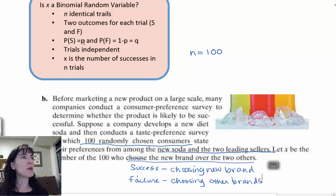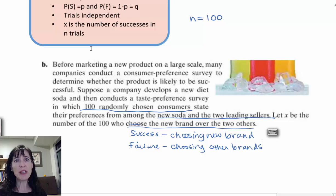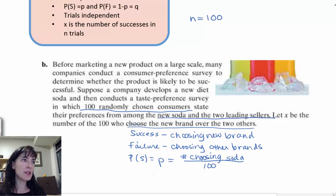And then we need to know, is there a probability of success and a probability of failure? It doesn't say what the probability of success and failure are, but we can see that it could be calculated. The probability of success, or the little p, would be the number choosing the soda over 100. And the probability of failure, or q, would just be 1 - p. So that seems like it's clear cut—you can actually do it.